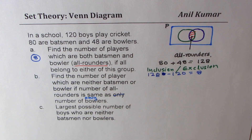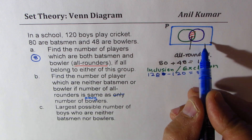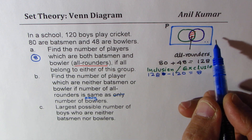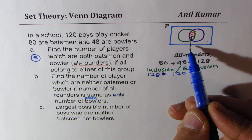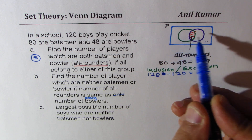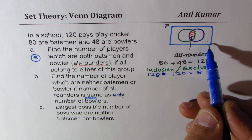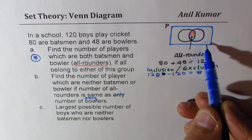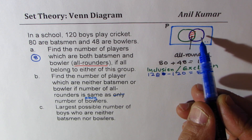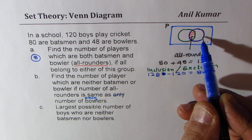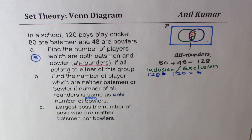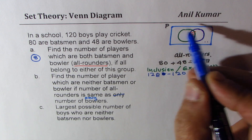In Part A we assumed that nobody is outside — all 120 are either batsmen or ballers. Some of you must be thinking: how can somebody be outside? Well, there are fielders which are neither batsmen nor ballers — they are outside.